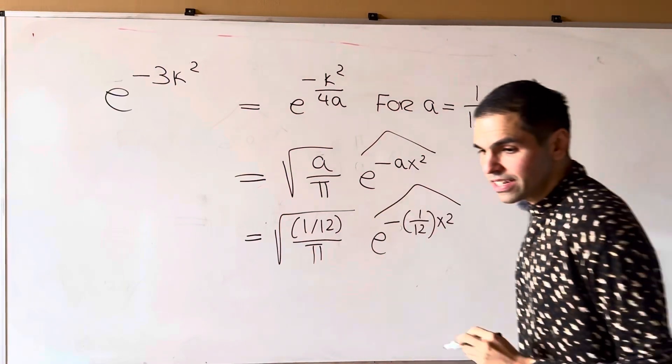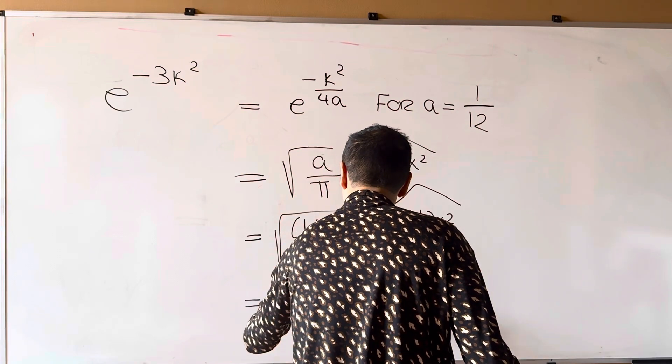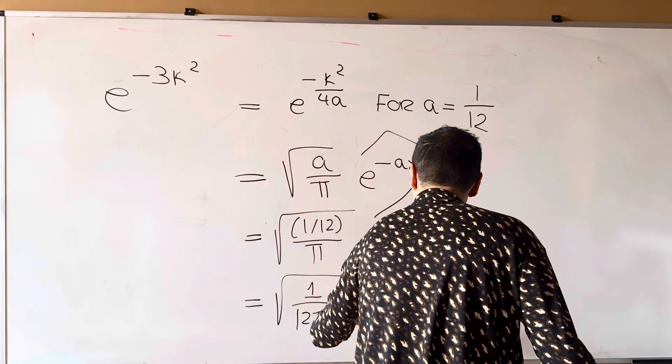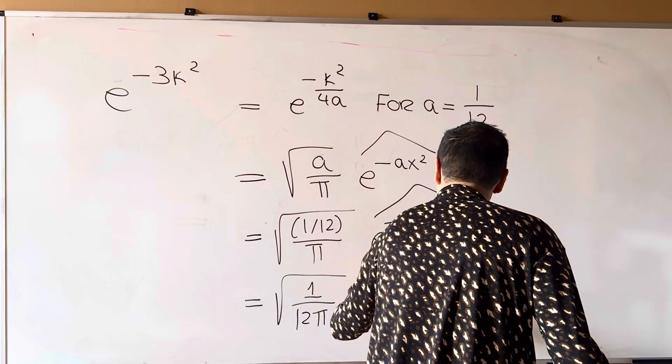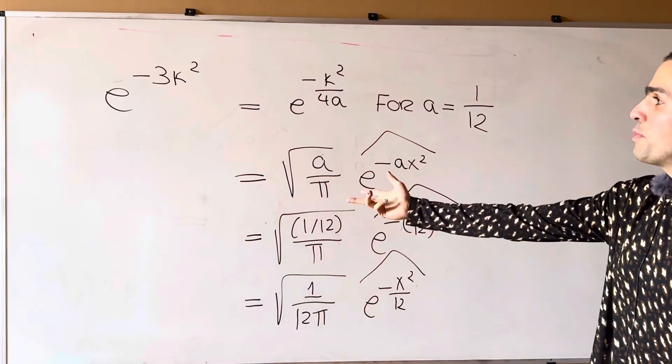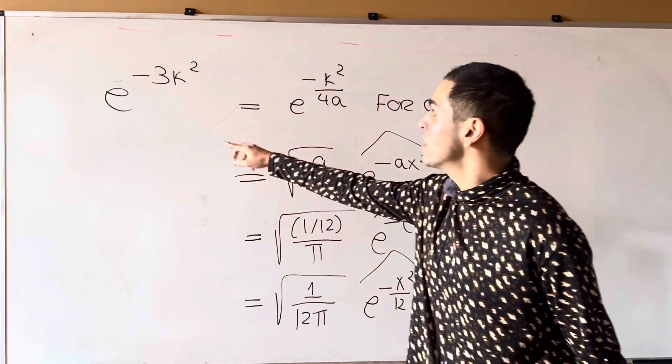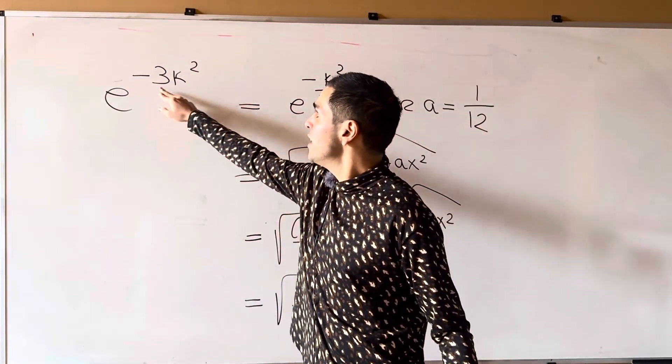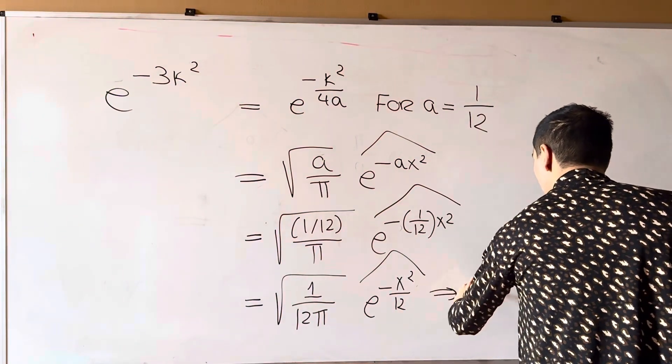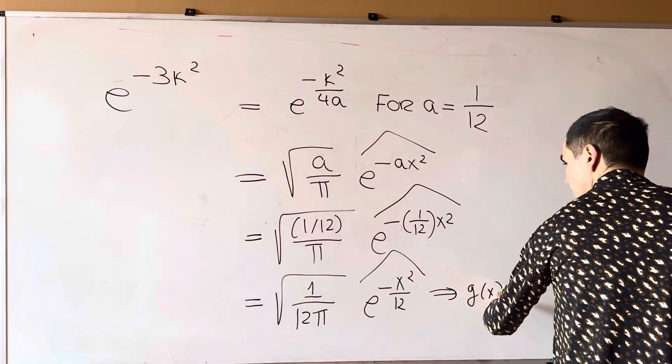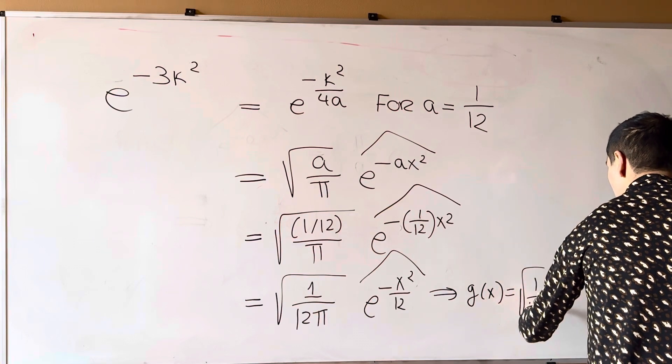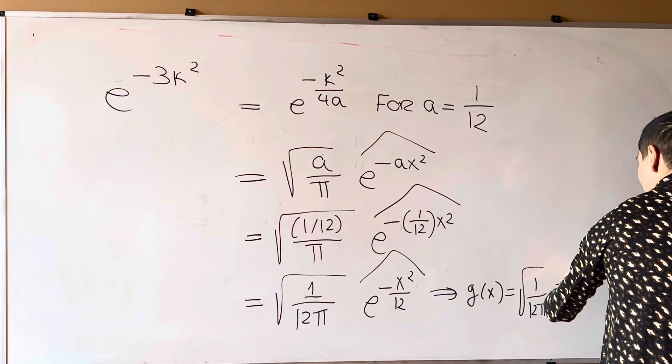And then we're basically done because now we have square root of 1 over 12 pi and e to the minus x squared over 12 hat. And you see that's precisely what we're trying to accomplish. We're trying to write e to the minus 3x squared as a hat. And so in the end our answer is g of x is square root of 1 over 12 pi times e to the minus x squared over 12.